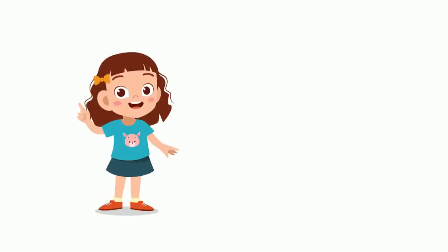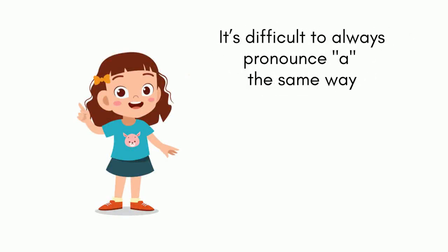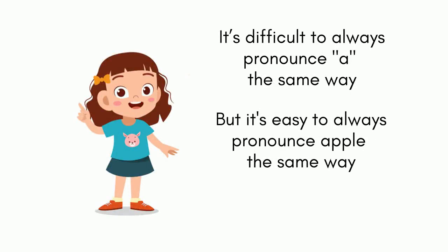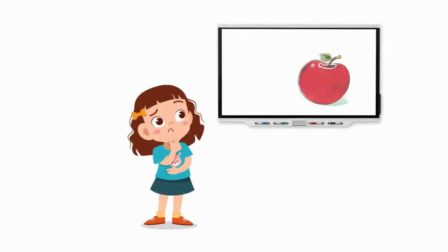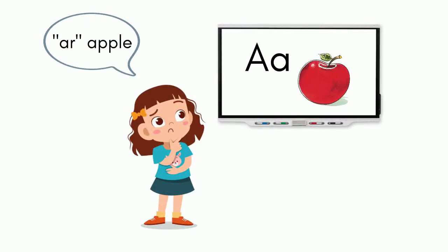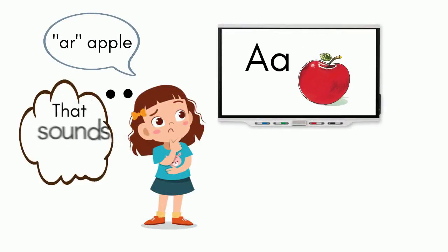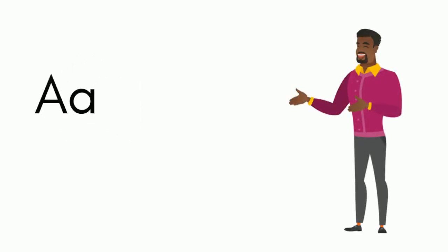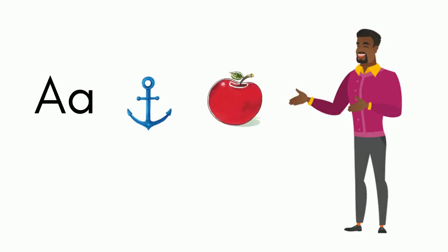It is much easier for both the teacher and the children to pronounce a word in the same way consistently than to pronounce an isolated sound in the same way consistently. We can also easily hear if two sounds are different. So A-P-L is what's called the anchor word for A. If you use anchor words when introducing sounds, it is much easier for the children and the teacher to pronounce sounds consistently and also to distinguish different sounds.